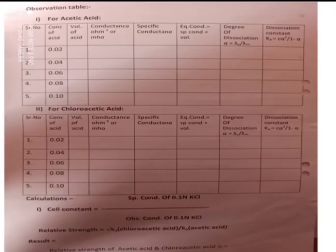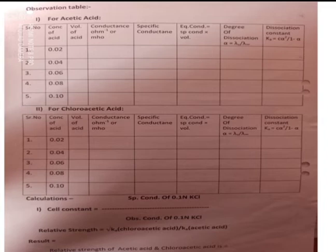Here is the observation table. Serial numbers 1 through 5 correspond to concentrations of the acid: 0.02, 0.04, 0.06, 0.08, and 0.10 normal. Then, the volume of acid — either 50 ml or 25 ml. The conductance obtained on the machine is noted here; just put the first solution in and note down the conductance.